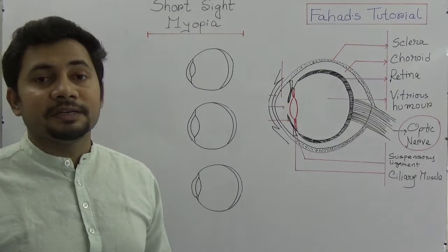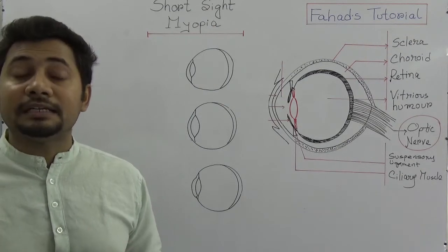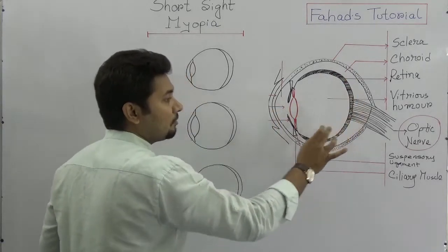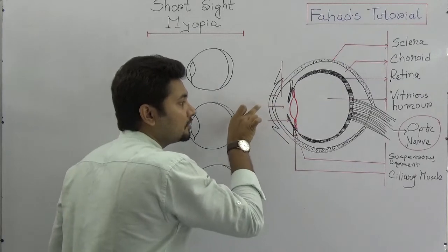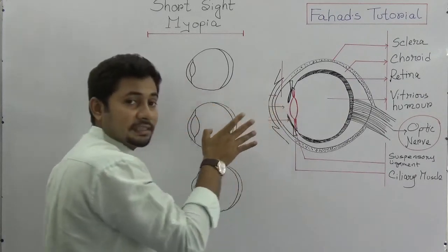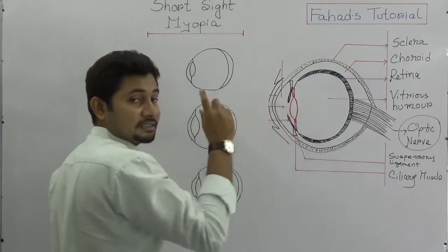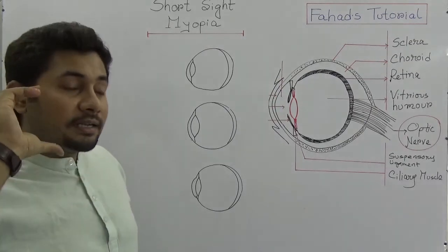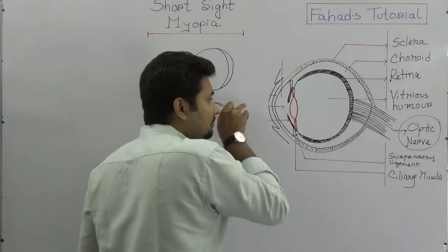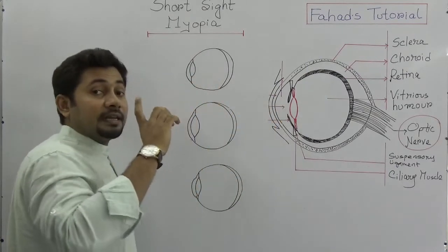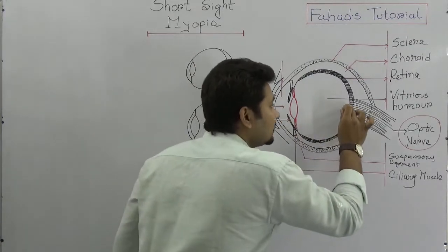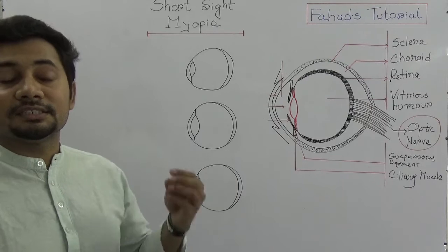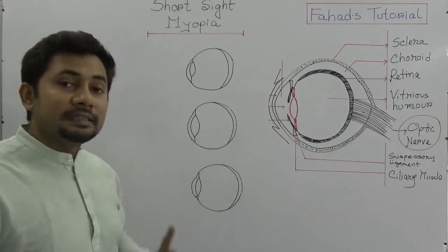So why does myopia happen? We have the lens, the cornea, and the retina. When light enters through the cornea and pupil to the lens — which is a convex lens — it converges the rays. The lens converges light onto the retina, which is a light-sensitive layer that creates the sensation of vision.